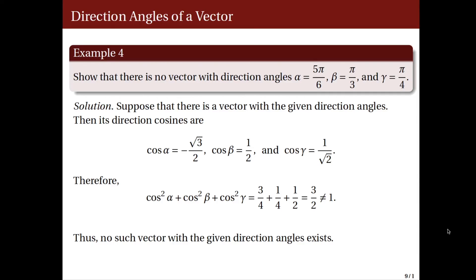This shows us that the direction cosines are dependent on each other. That is, if you know two direction cosines, then you can always compute the third one. For example, if you know the angles alpha and beta, then you can compute cosine of alpha and cosine of beta, and using the identity cosine squared alpha plus cosine squared beta plus cosine squared gamma equals 1, you can always compute the third angle. This ends the first part of the lecture. Thank you very much for listening, and I hope you check out the second video for the continuation of our discussion.